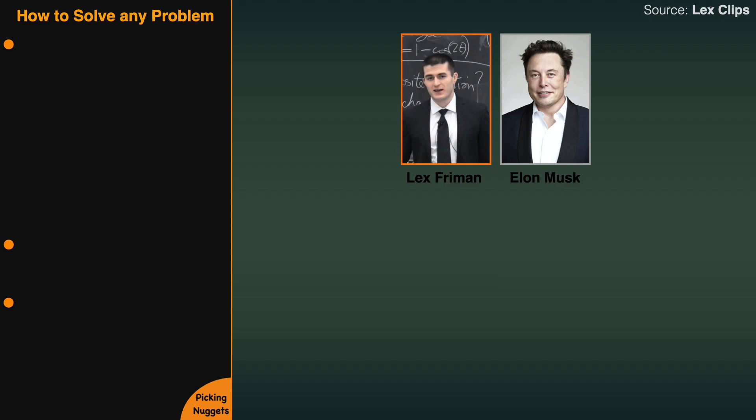Can you try to introspect your particular biological and neural network, your thinking process, and describe how you think through problems — the different engineering and design problems? Is there a systematic process? You've spoken about first principles thinking, but is there a kind of process to it?